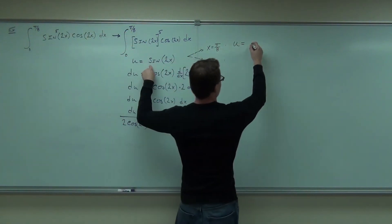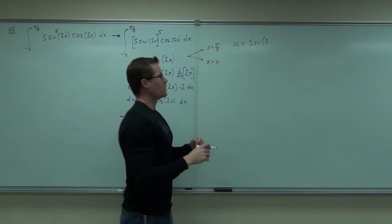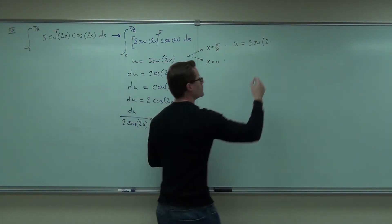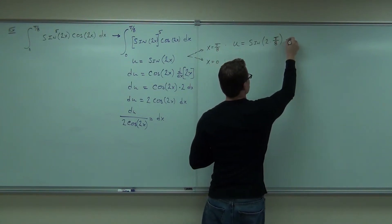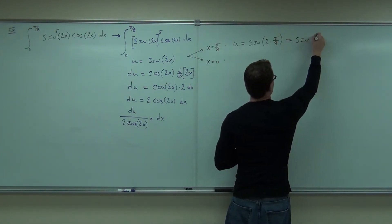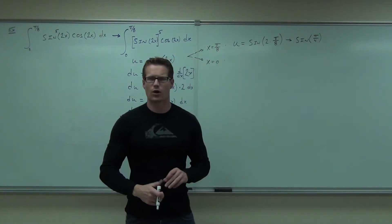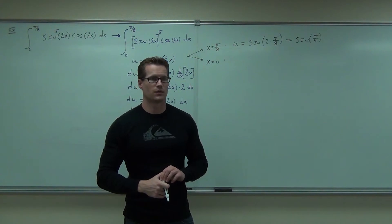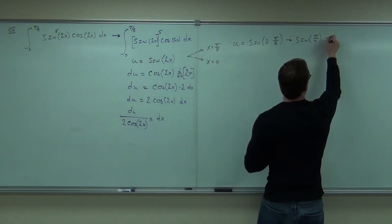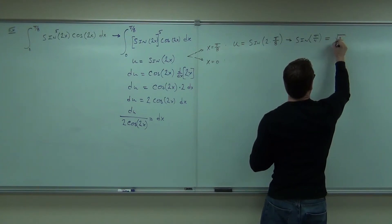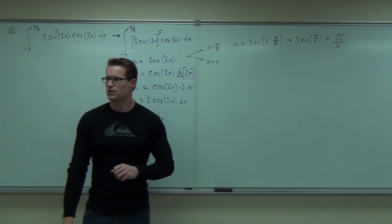So here we'll have sine of 2 times x. Well, x in this case is pi over 8. How much is sine of pi over 4? Square root of 2 divided by 2. Very good. You guys okay with the root 2 over 2? Awesome.